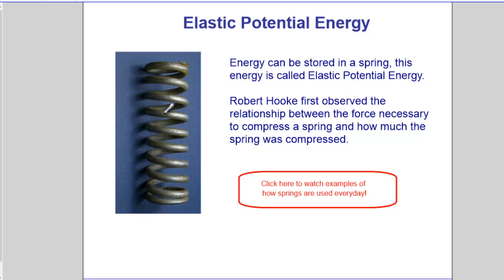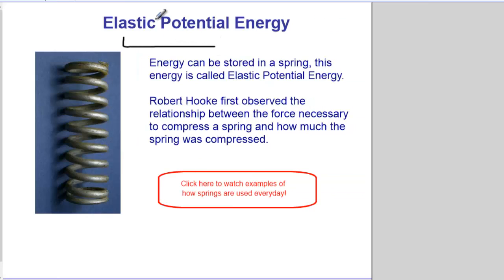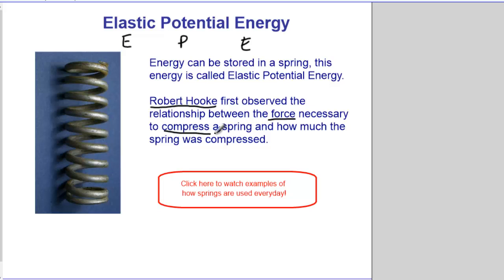Energy can be stored in a spring — this is called elastic potential energy, and we describe it using the letters E, P, E. The person who first observed this is Robert Hooke, and he observed the relationship between the force necessary to compress the spring and how much it was compressed. So force is related to compression.